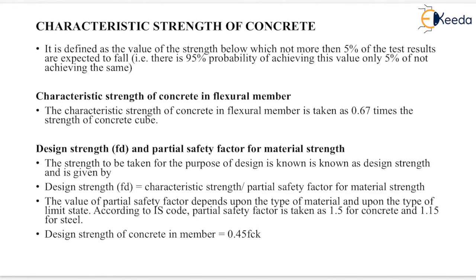The next property is characteristic strength of concrete. It is defined as the value of the strength below which not more than 5% of the test results are expected to fall. That is, there is a 95% probability of achieving this value and only 5% probability of not achieving the same.